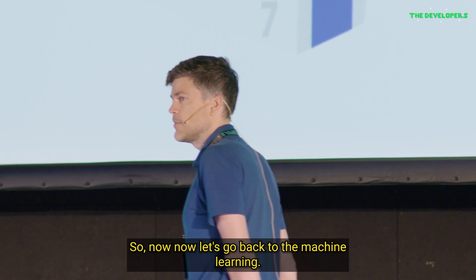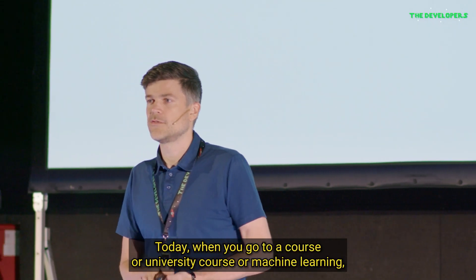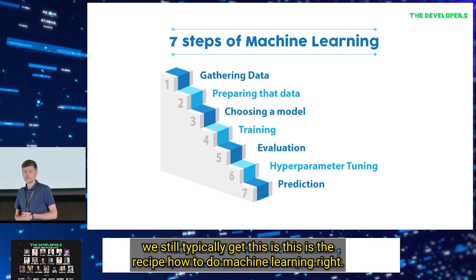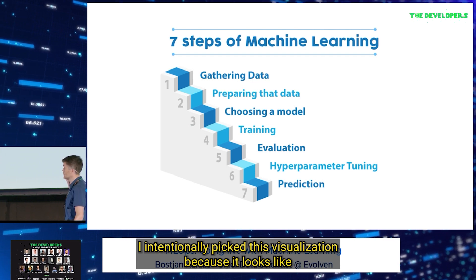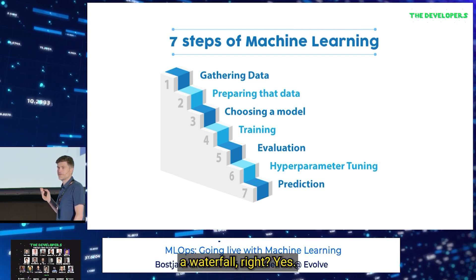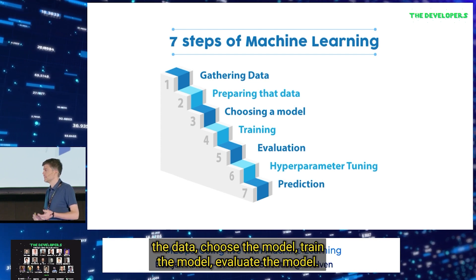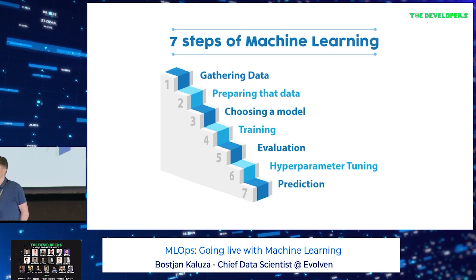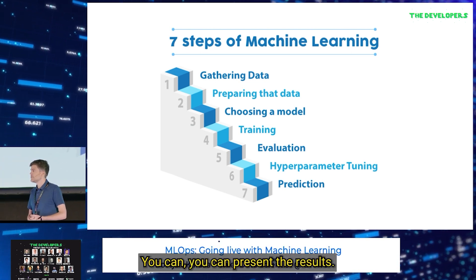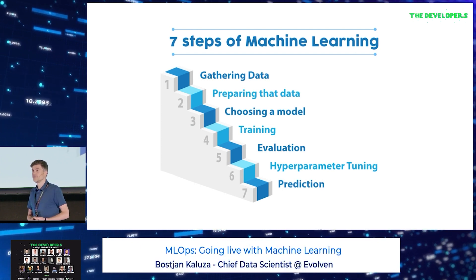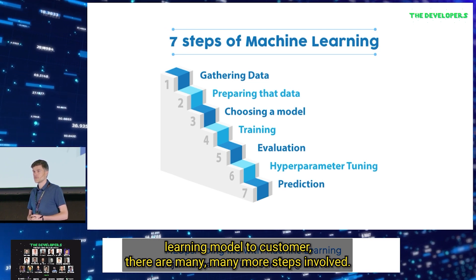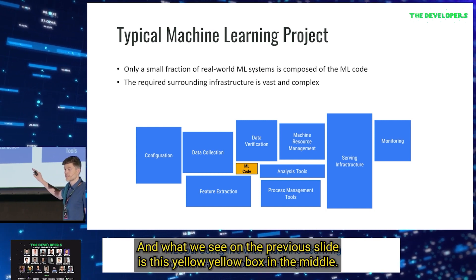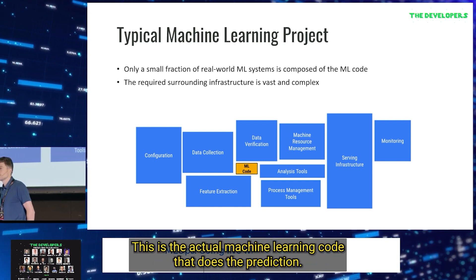Now let's go back to machine learning. Today, when you go to a university course on machine learning, we still typically get this recipe: the seven steps of machine learning. I intentionally picked this visualization because it looks like a waterfall. You gather the data, prepare the data, choose the model, train the model, evaluate the model, maybe do some hyperparameter tuning, do the predictions, calculate the accuracy, and you are done. You can maybe publish a paper or present the results. But that's not the whole story. What we see on the previous slide is this yellow box in the middle — the actual machine learning code that does the prediction.